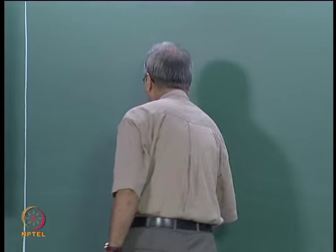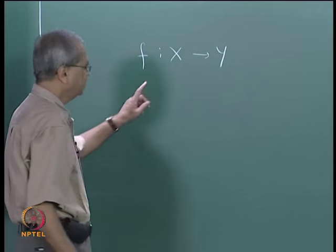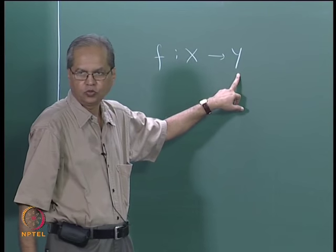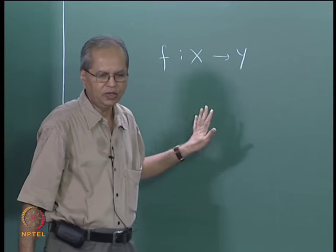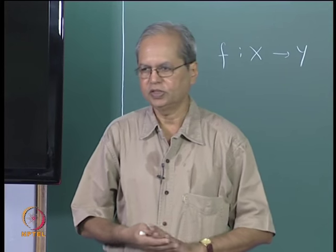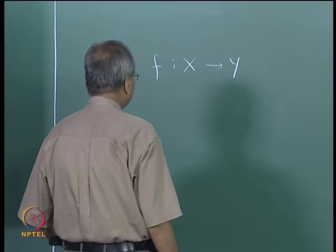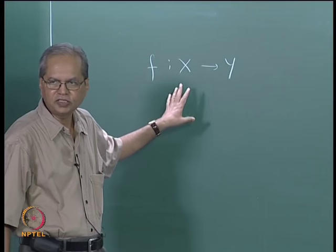We were discussing the properties of continuous functions. Let us recall that we had proved the following: if you take a function f from x to y, then f is continuous if and only if the inverse image of every open set in y is an open set in x. This is quite useful in deciding about the continuity of a function. It follows that if x is a discrete metric space, then every function on it is continuous.